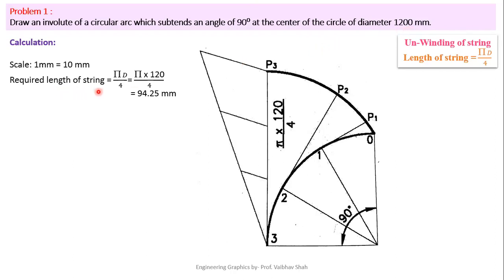The required length of string is the length needed to cover the complete surface of our circular arc, which is πd/4. So π × d, where our diameter is 1200 mm but using the scale we take 120 mm, divided by 4 gives us 94.25 mm as the total required string length.